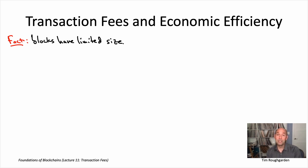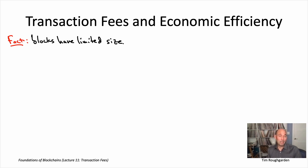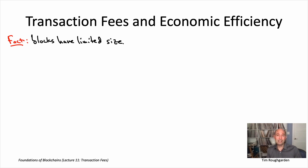Both those numbers are orders of magnitude shy of what you'd get in a traditional finance payment network like Visa. This low throughput is clearly a potential impediment to widespread mainstream adoption of blockchains like Bitcoin and Ethereum. Everybody has known this for years. That's why there have been intense efforts around how to scale up these blockchains to support many more transactions per second — ideally orders of magnitude more than they do right now.